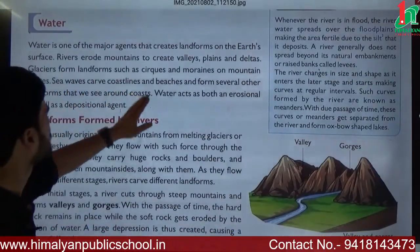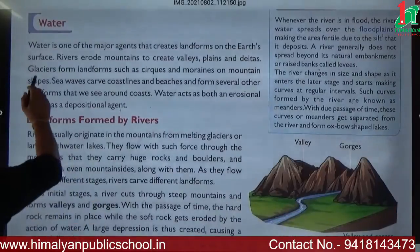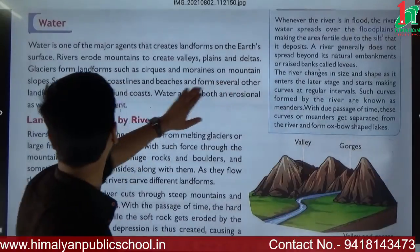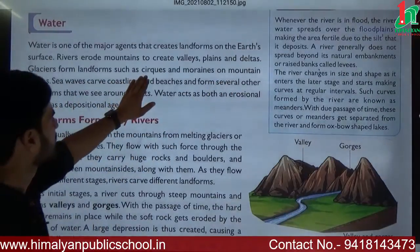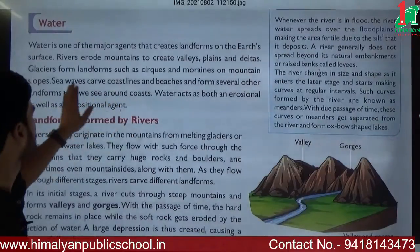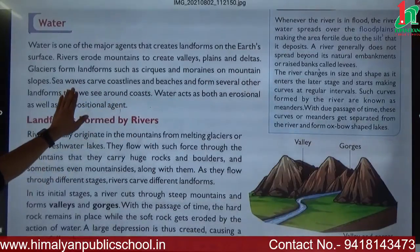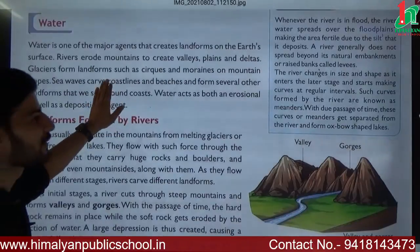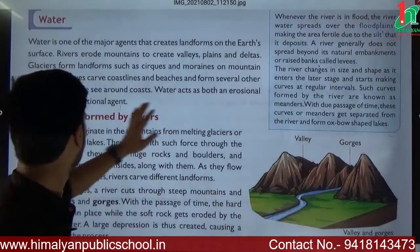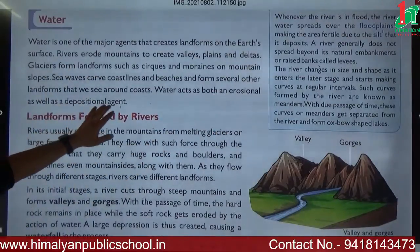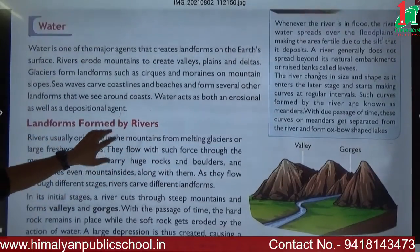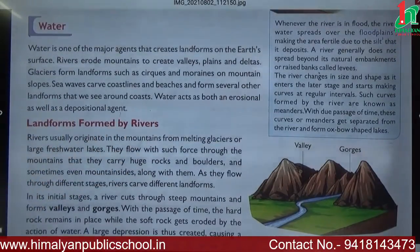With the movement of glaciers, landforms like cirques and moraines are created on mountain slopes. Sea waves carve coastlines — if there is movement of sea waves around the coastline, it shapes various landforms. The coastline forms several other landforms that we see around the coast, which we will see in the next slide, including landforms created by wind and sea waves.